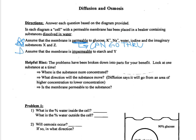It also says assume that the membrane is impermeable to starch and the substance Y. Impermeable means that these things cannot go through. It's important to always read these directions because you're going to be referring back to them often as you do the problems.